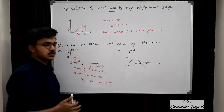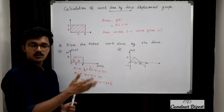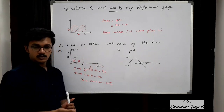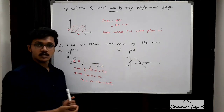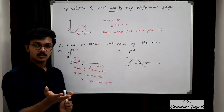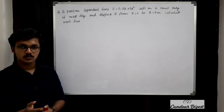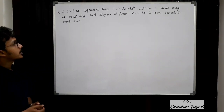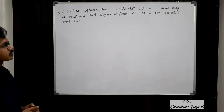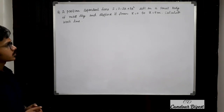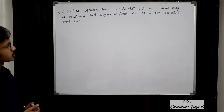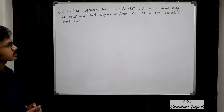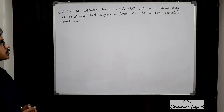The second graph question is similar — you just need to find the area under the curve to get the work done. Try it out and let me know the answer in the comments below. Next problem: a position-dependent force F = 7 − 2x + 3x² acts on a body of mass 2 kg and displaces it from x = 0 to x = 5 meters. Calculate work done.